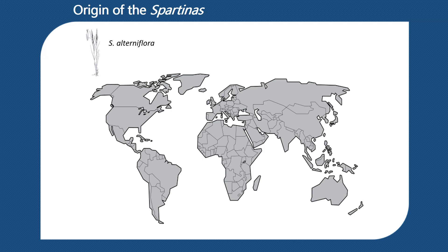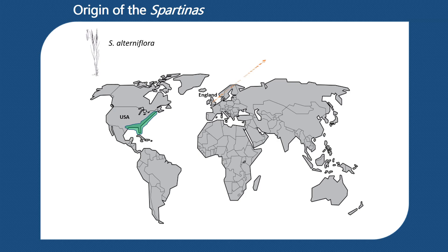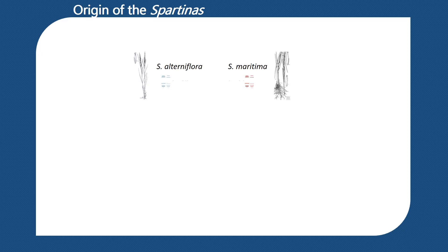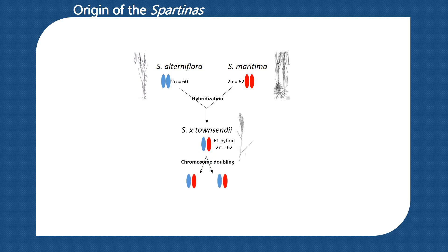Spartina alterniflora is a native species of the United States, originating from the Atlantic and Gulf Coast. However, in 1816, this species was accidentally introduced into England by shipping. But in England there was already a native Spartina species, Spartina maritima. Therefore, in England, the two diploid species hybridized and gave rise to the F1 hybrid Spartina × townsendii.